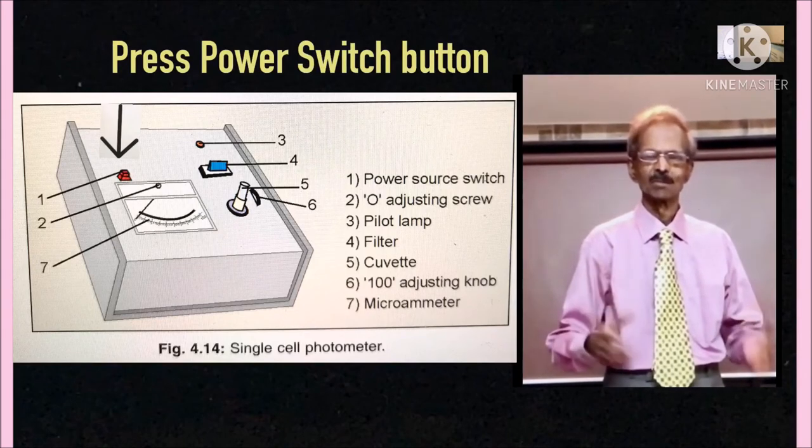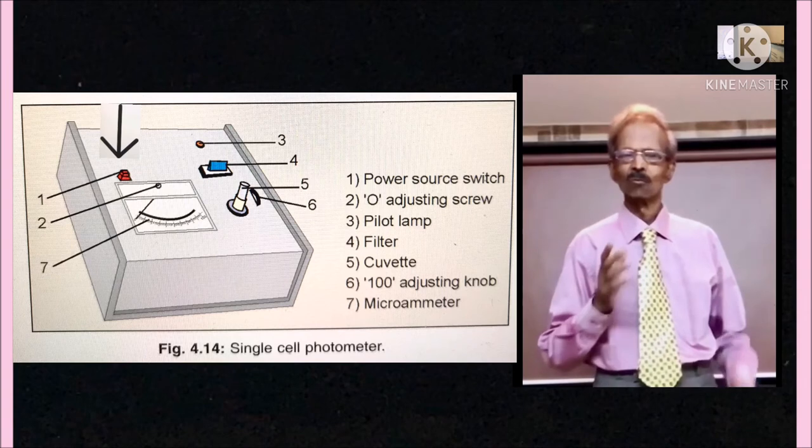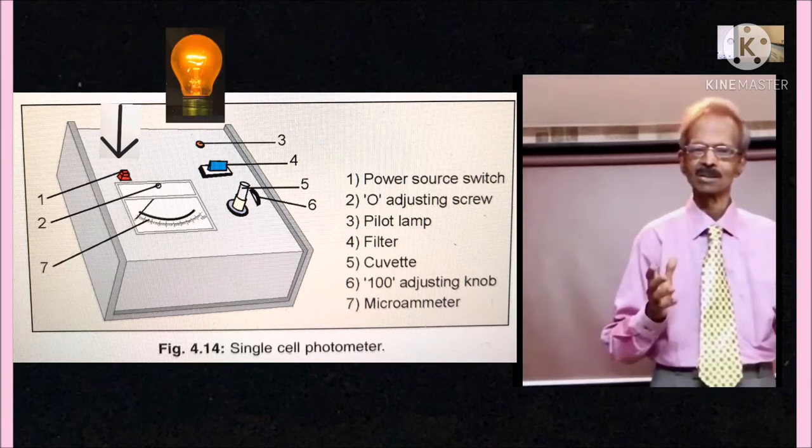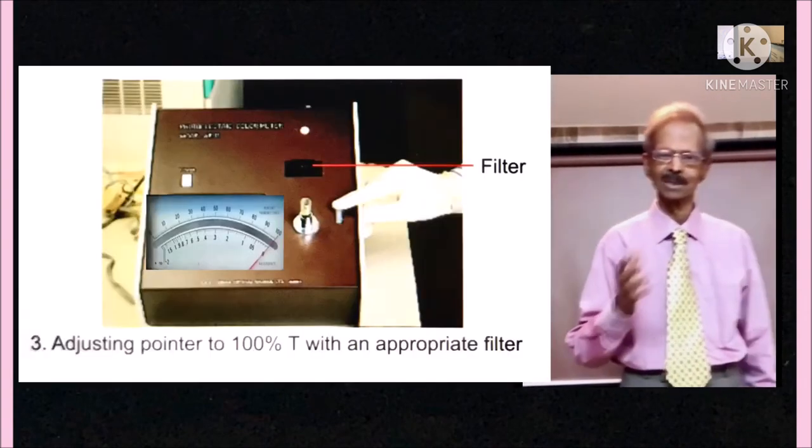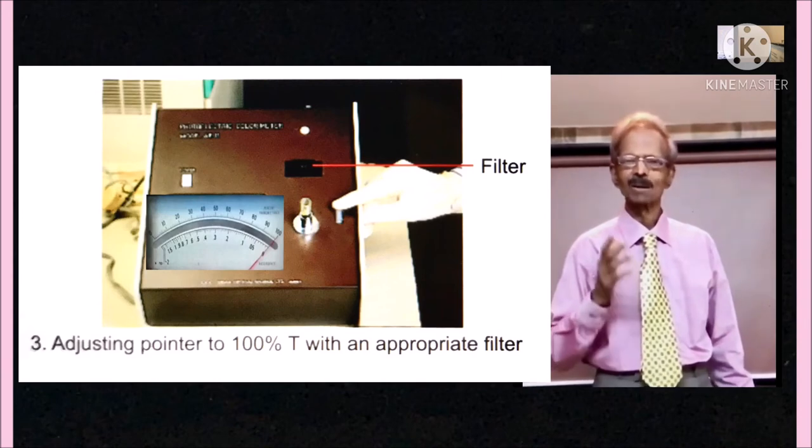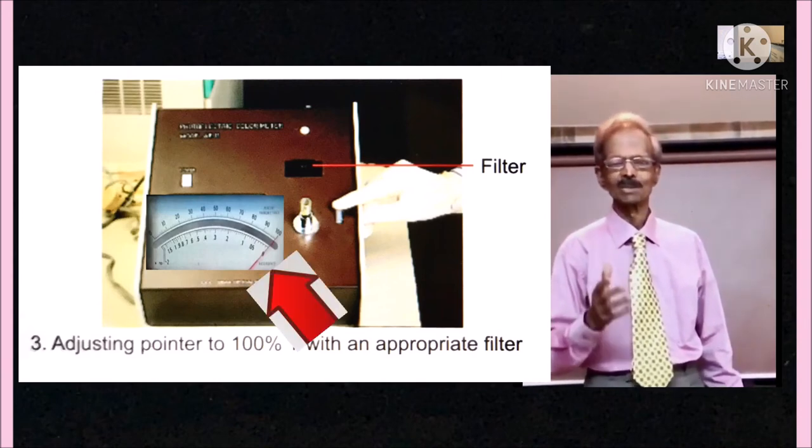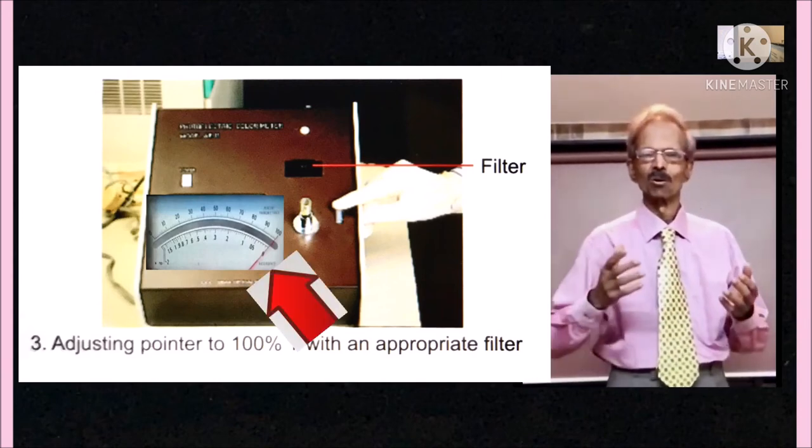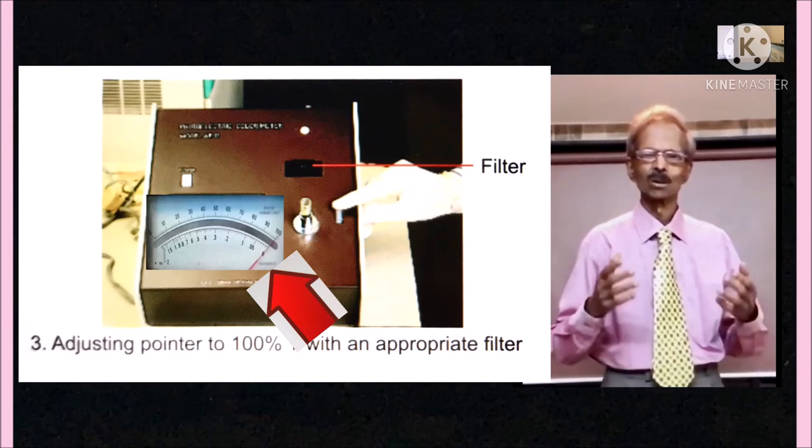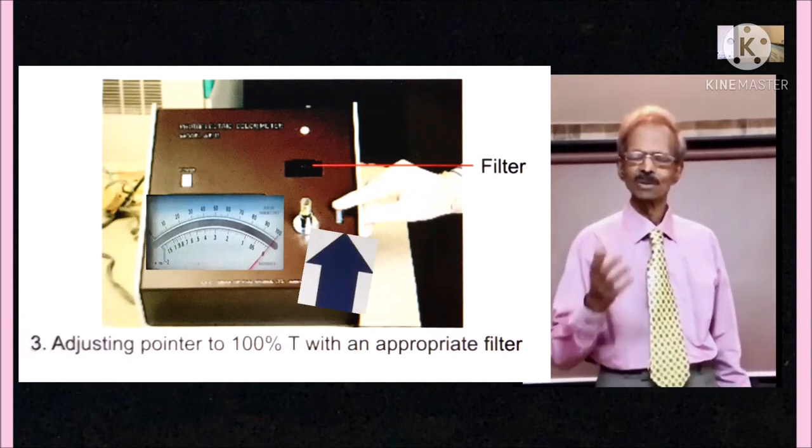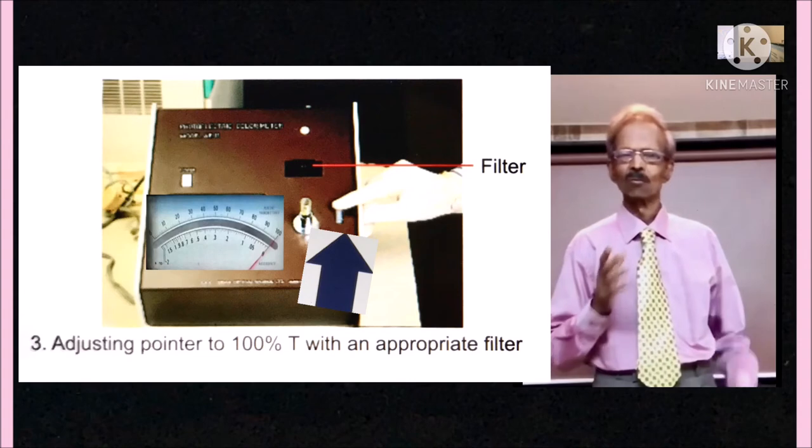5. Bring pointer of galvanometer to 100% transmittance, that means 0 optical density, for distilled water using this particular disc. 6. Fill another cuvette with standard solution and note the scale reading either as optical density or percent transmittance.